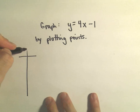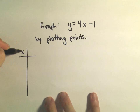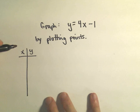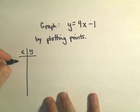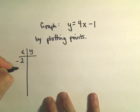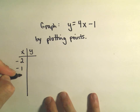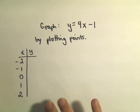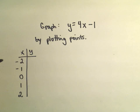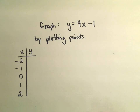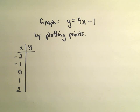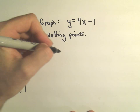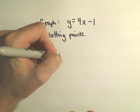Assuming we weren't aware of that at this point, let's just do the same thing and plot some points. Maybe we can plug in x equals negative 2, negative 1, 0, positive 1, and positive 2. You can use any numbers you want. I try to graph stuff around the origin with smaller numbers to make the arithmetic easier.